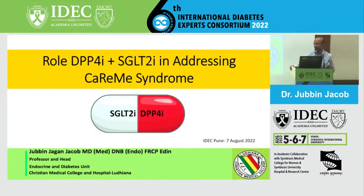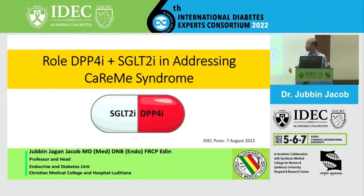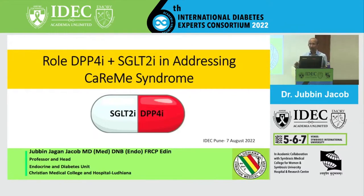I'm going to talk about something slightly different — whether we can do all this with a single combination of two drugs: an SGLT2 inhibitor and a DPP-4 inhibitor. Fortunately, we now have generic combinations of DPP-4 and SGLT2, so the financial issues are also taken care of.